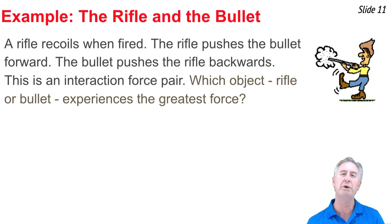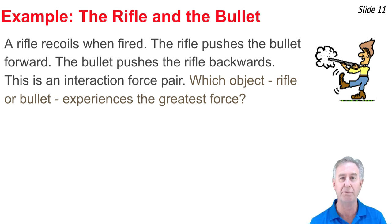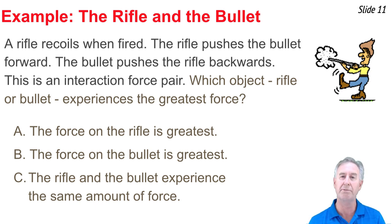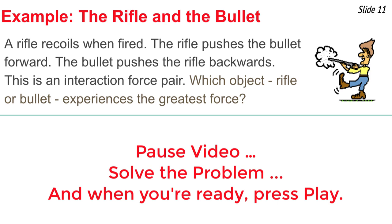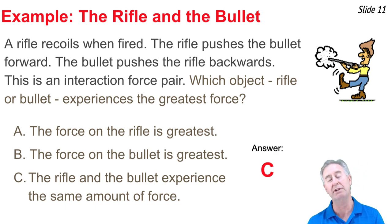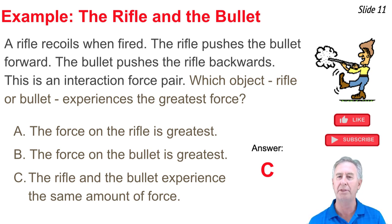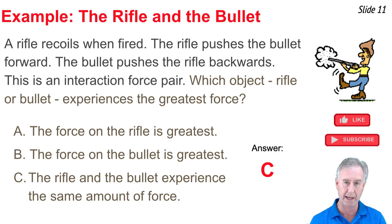Here's another classic question: a rifle recoils when it's fired. The rifle pushes the bullet forward down the barrel, and the bullet pushes the rifle backwards — an interaction force pair. Which object, the rifle or the bullet, experiences the greatest force? The answer is again C: the force on the bullet is equal in magnitude to the force on the rifle. Make sure you're not confusing the effect of the force with the force itself. The forces are equal, but the accelerations depend inversely upon mass. The bullet, having much lesser mass, has a much greater acceleration, making the rifle side of this interaction the safer place to be.